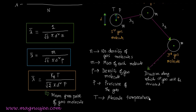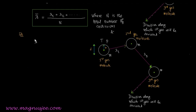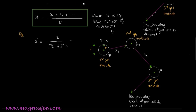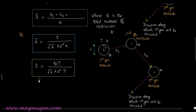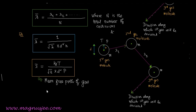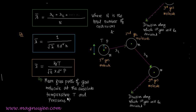These are the three expressions of mean free path of the gas molecule. Lambda bar = 1 / (root(2) × pi × d² × n). Another important expression: lambda bar = kT / (root(2) × pi × d² × P), where T is the absolute temperature and P is the pressure of the gas. This is the main expression of mean free path at absolute temperature T and pressure P.